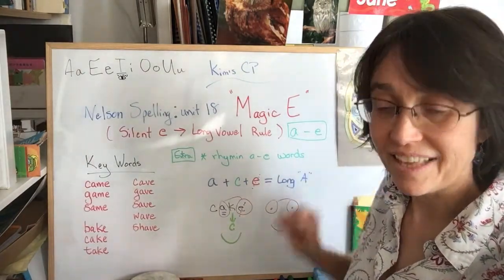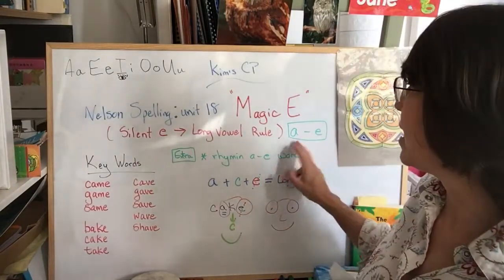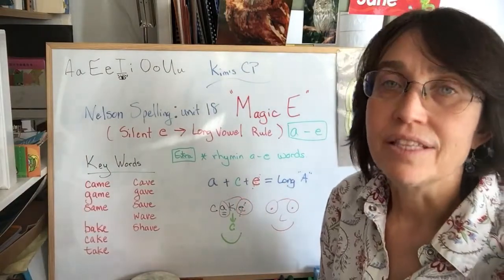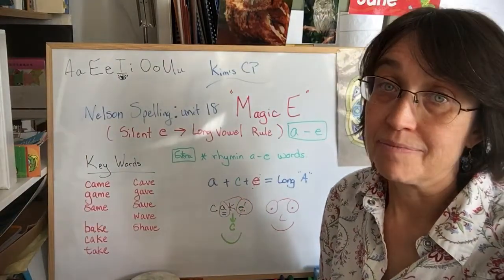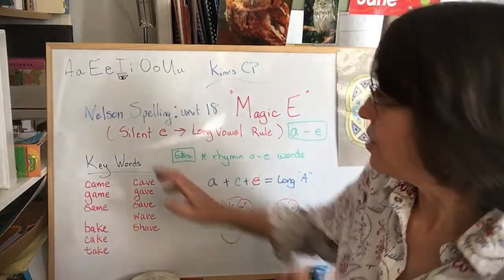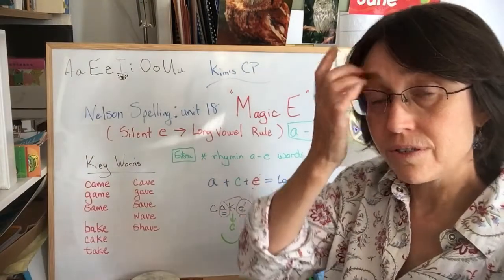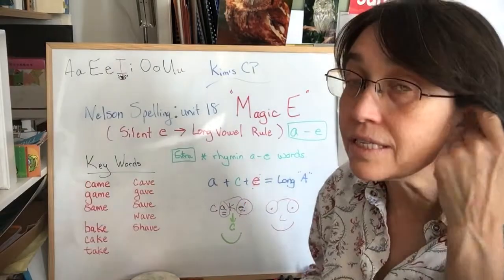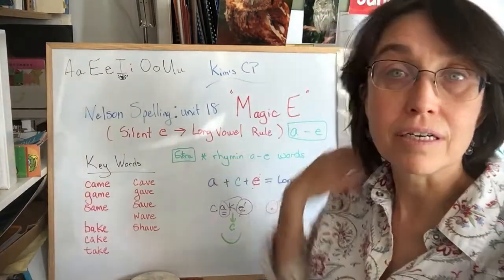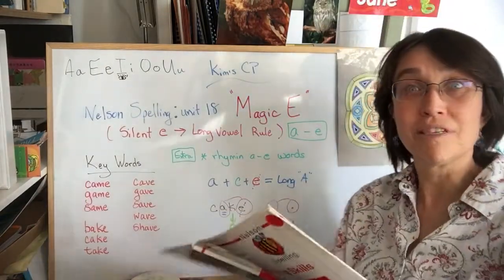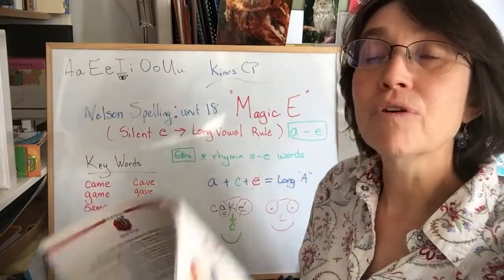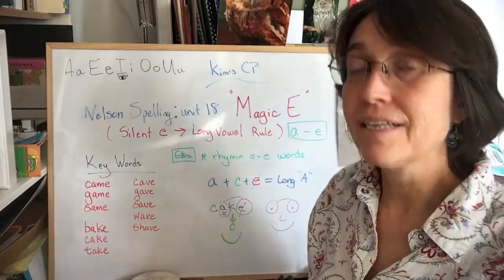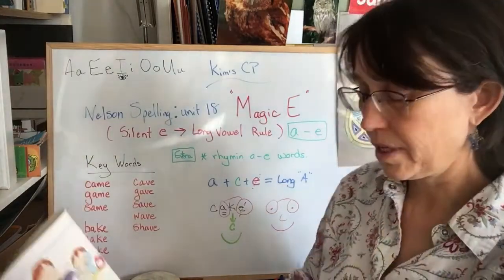A, magic E. So when you have the A, magic E team, then the sound is A. So let's take a look at the keywords. I will read them twice. The first time just listen. Listen. The second time and repeat. This time listen.